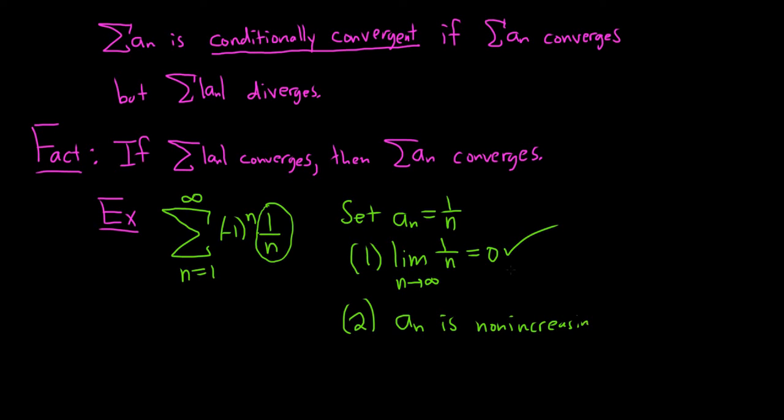In other words, it's decreasing or staying the same. This is clearly decreasing. The bigger n gets, the closer it gets to 0. So both of these are satisfied, so converges.